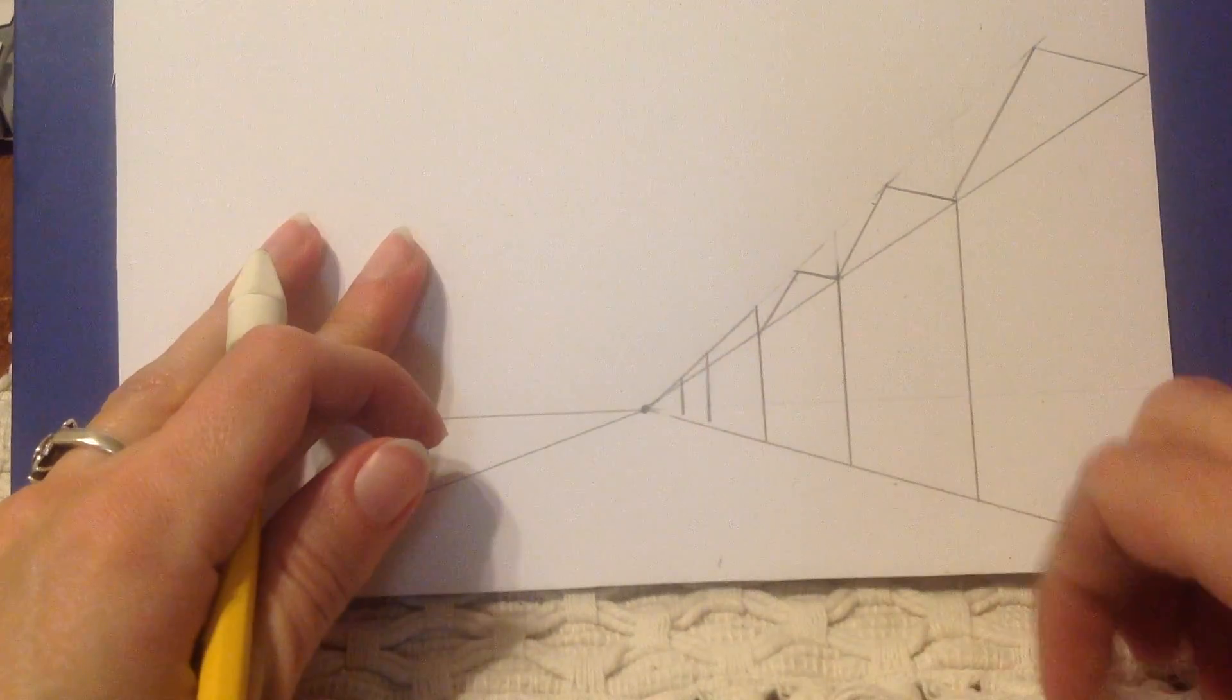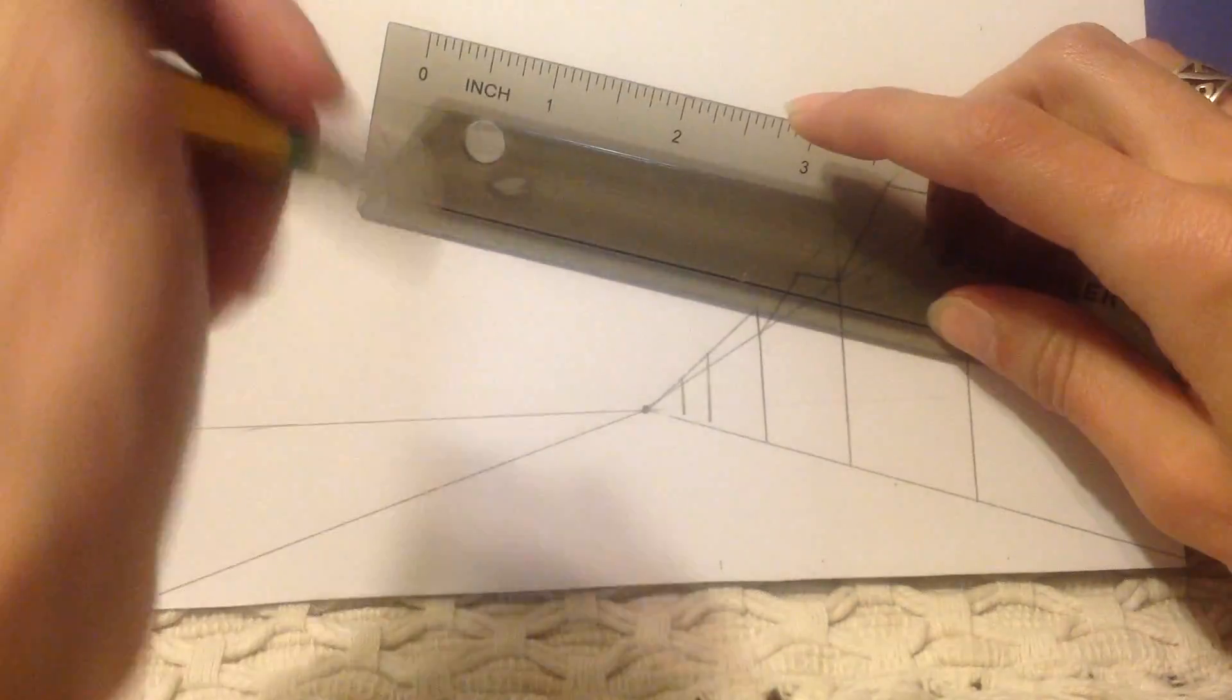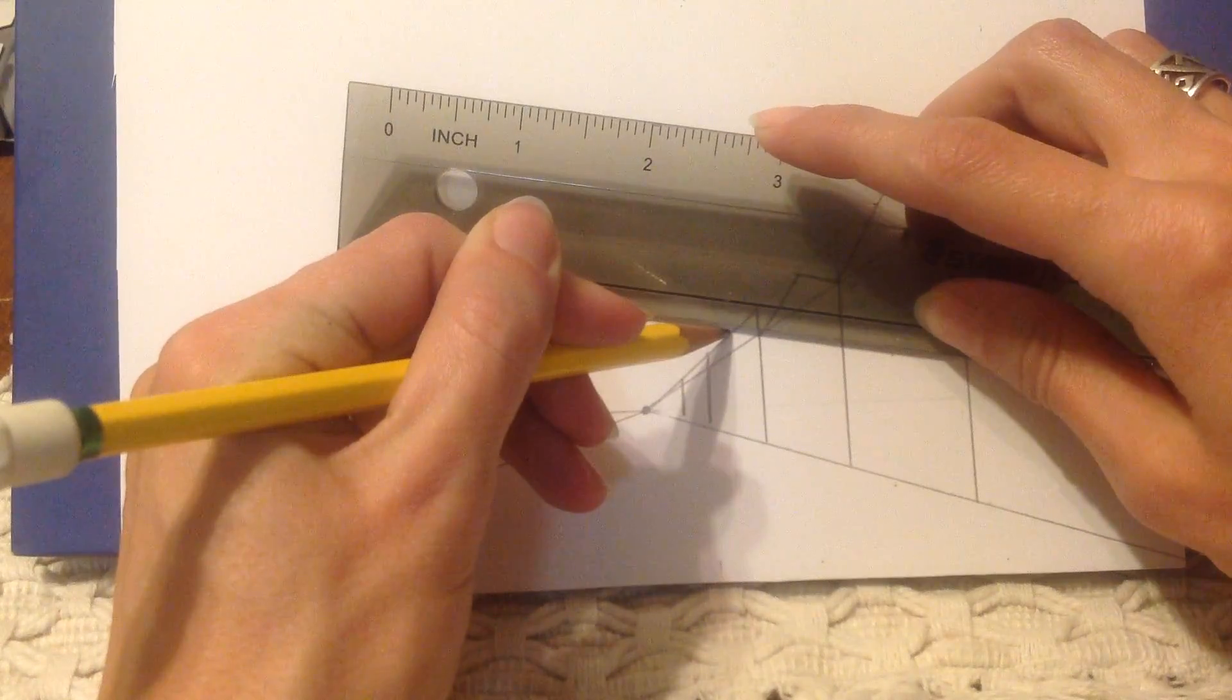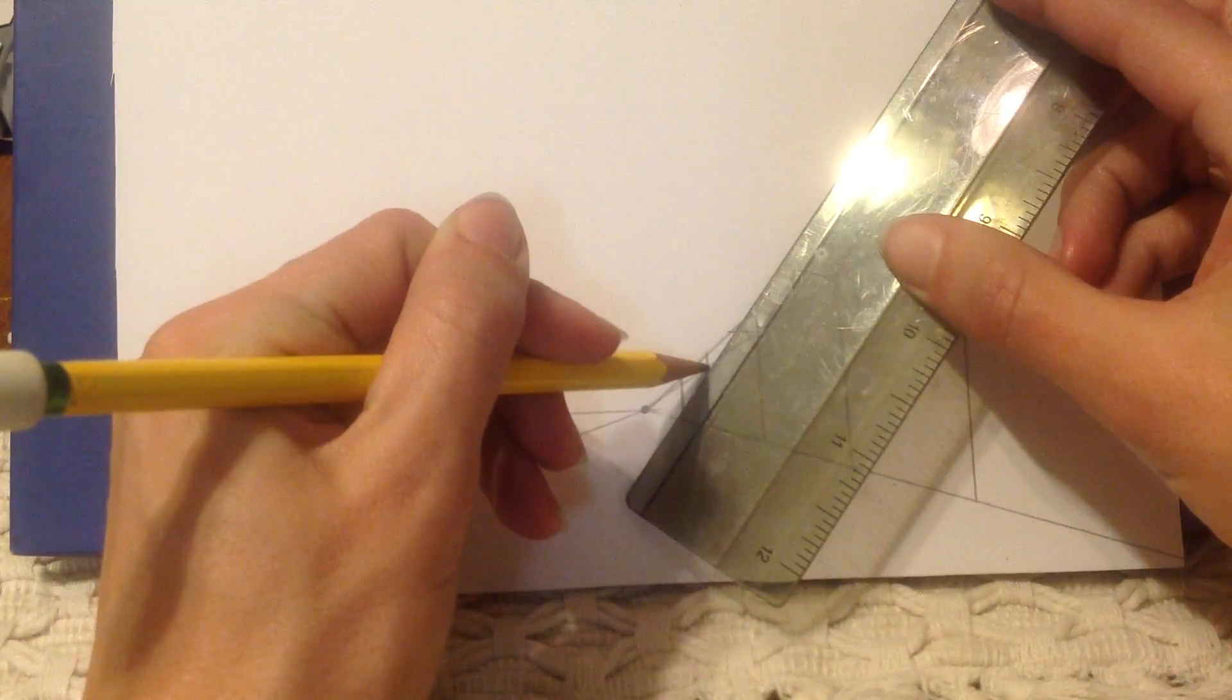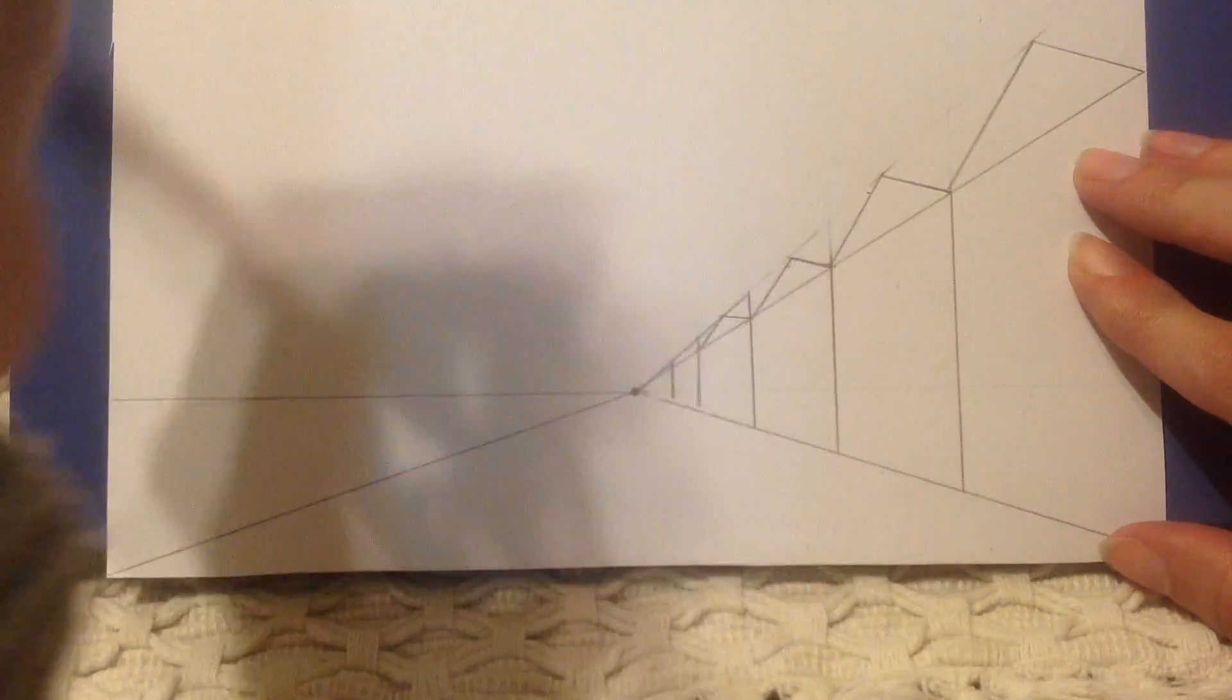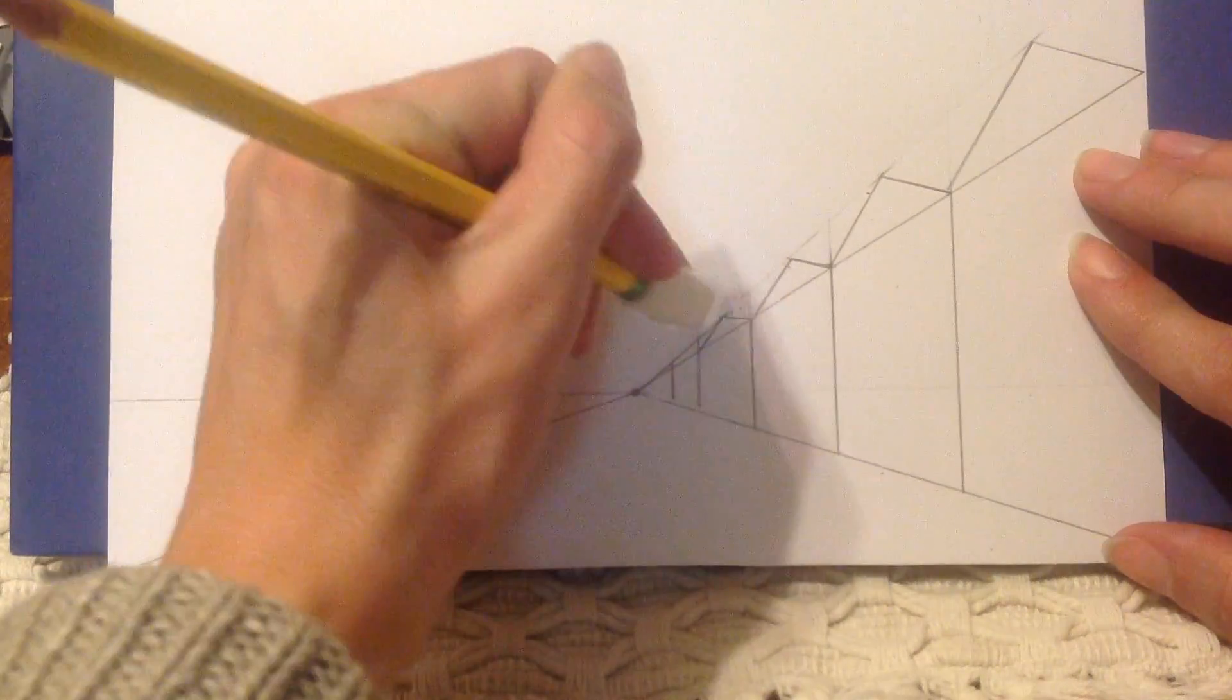I'm going to do it two more times because I've got two more right here. Go from the corner to the top and from the top to the next corner. You can see how the roof of the house gets smaller and smaller as well as the houses getting smaller and smaller going back in space.